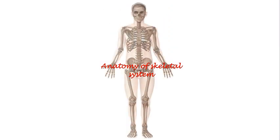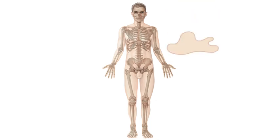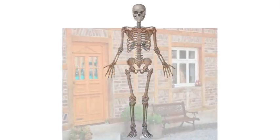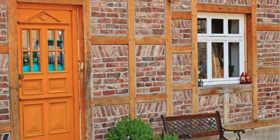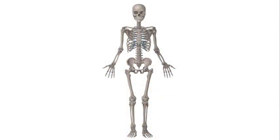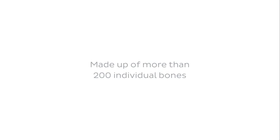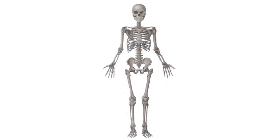The skeleton is the framework that gives your body shape and support and essentially stops you from being just a blob on the floor. Think of it like the wooden beams that make up the internal framework of a house. The human skeleton is made up of more than 200 individual bones, 206 to be precise, and these bones are connected to each other through articulations, ligaments and tendons.